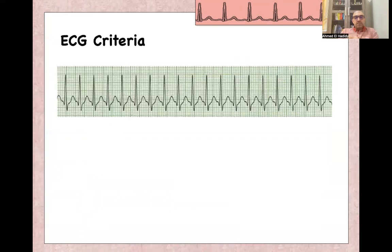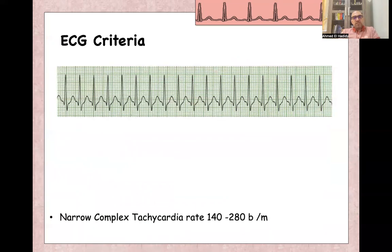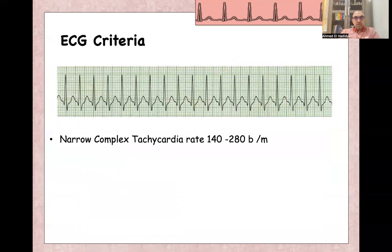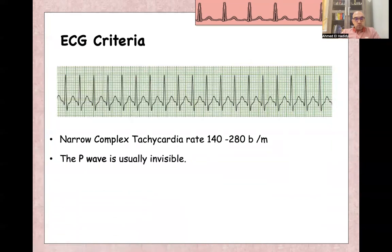For ECG criteria for SVT, you will find narrow complex tachycardia that is regular, with a rate of around 140 to 280 beats per minute, and the P-wave is usually invisible.